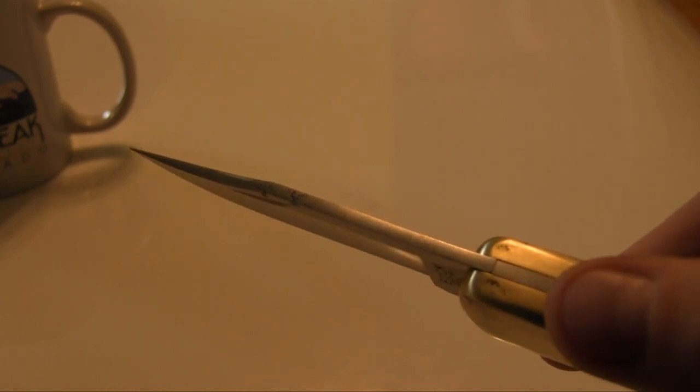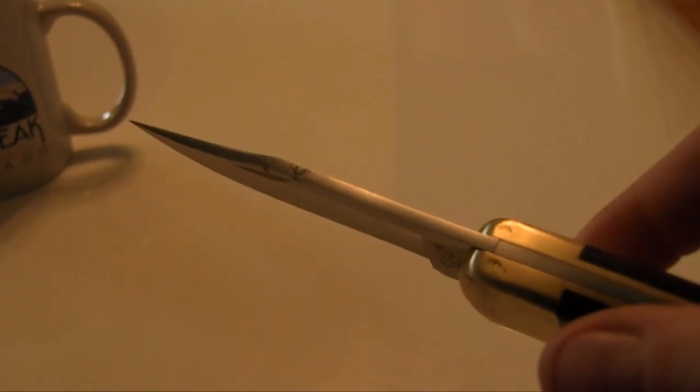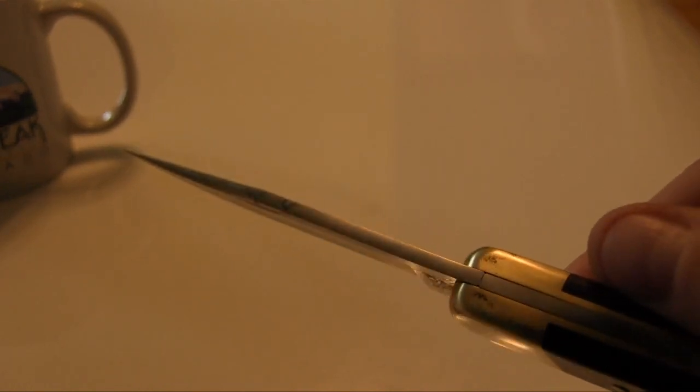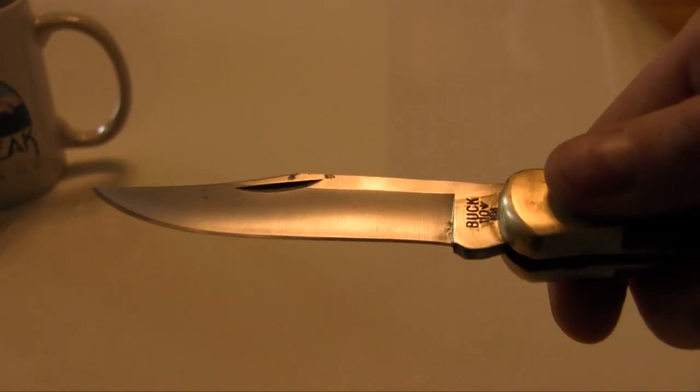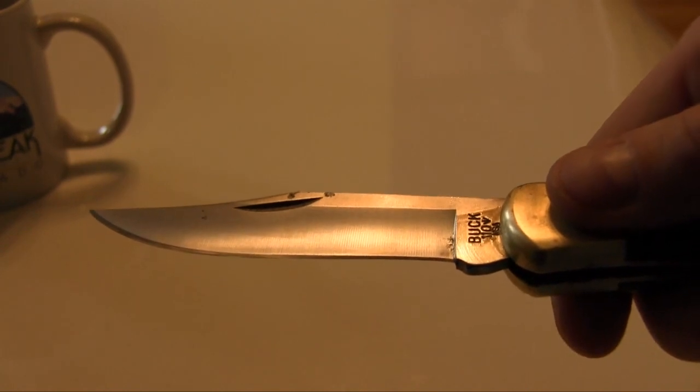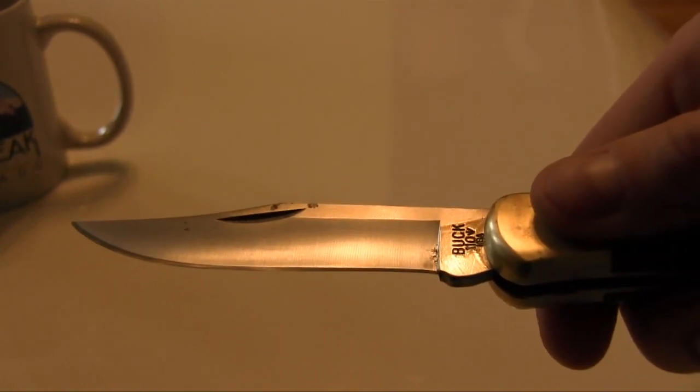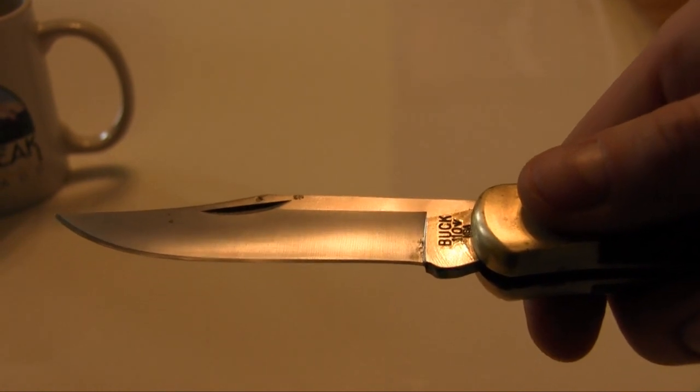The blade thickness is 0.12 inches, strong and still thin enough to cut like a razor. The blade length of the 110 Folding Hunter is 3 and 3 quarter inches or 9.5 centimeters, perfect for any outdoor activity or hunting purpose.